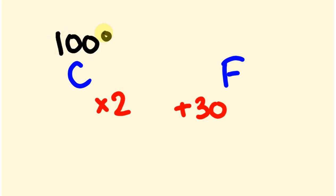So 100 degrees Celsius when we change this to Fahrenheit. First off, we're going to multiply by 2, so 100 times 2 is 200, plus 30 is 230 degrees Fahrenheit.